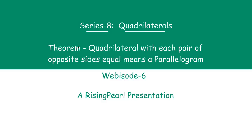In today's webisode 6, we will talk about the theorem: a quadrilateral with each pair of opposite sides equal means it is a parallelogram. So this is our theorem, and we are going to go ahead and prove this. Let us quickly read that theorem again: a quadrilateral with each pair of opposite sides equal means it's a parallelogram.